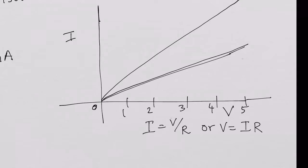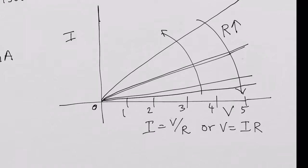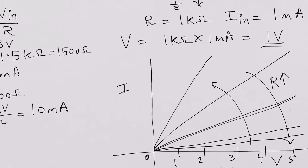You have more current for the same applied voltage. If you keep increasing the resistance, the curves become closer and closer to the x-axis, as R is increasing. If you decrease the resistance, the curves tilt more steeply. But it is always a straight line — the relationship between voltage and current in a resistor is linear.